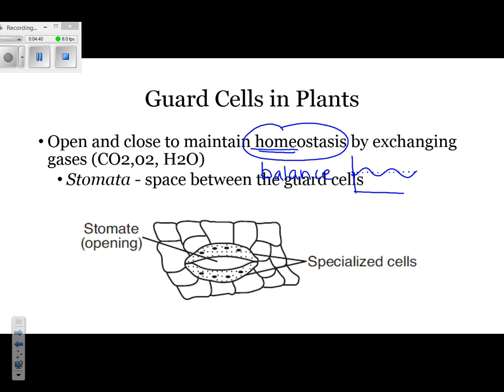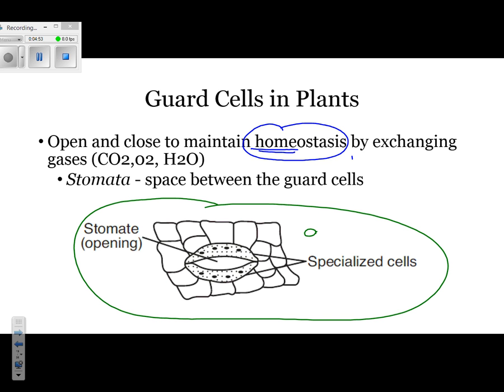Now the little space in between those two are going to be called a stomate. Or sometimes you might see stomata. These specialized cells, make sure you know this diagram here, those specialized cells that they're referring to, those are actually the guard cells. Guard cell, guard cell, and then the space in the middle is the stomate.